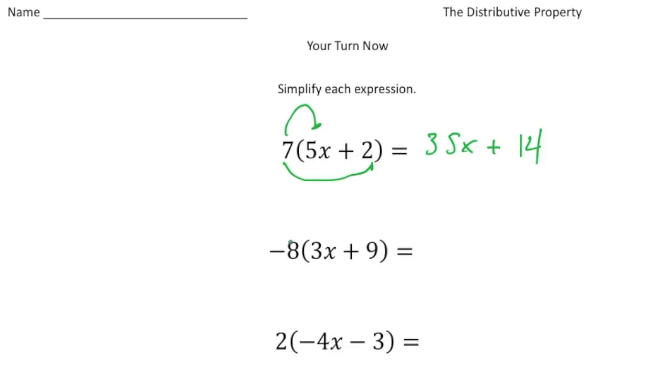Now here we have a negative eight, right? So it's going to be negative eight times 3x, which is negative 24x. And then negative eight times nine, which is negative 72. So we're going to say minus 72.